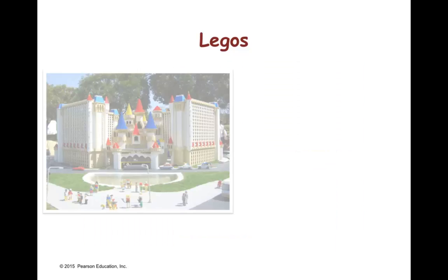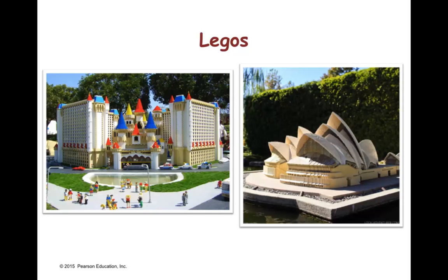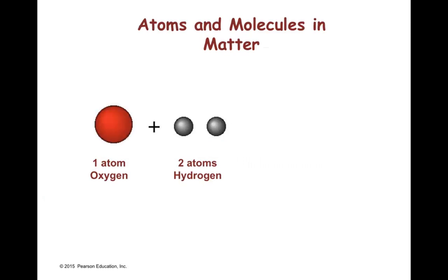For example, here we have a replica of the Excalibur Hotel from Las Vegas. And also a replica from the Sydney Opera House. Both of them you can find it in Legoland in California. In the same way chemists love to combine atoms to create molecules. Here we have a red sphere that is going to represent an atom of oxygen and a white sphere that is going to represent the atom of hydrogen. We can combine different atoms, for example, one atom of oxygen with two atoms of hydrogen to produce one molecule of water, H2O. So we have two hydrogens and one oxygen to produce that molecule of water.